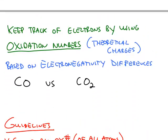Now a better way to figure out what's being oxidized and what's being reduced is to use oxidation numbers, which are theoretical charges. They're theoretical, not real charges, but we use them so we can keep track of all of the electrons. It's based on electronegativity.